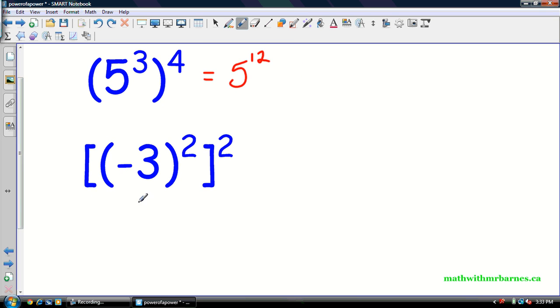And this one, same thing. So the only difference here is I have a negative base, so remember my base doesn't change. I got negative 3, 2 times 2 is 4. And that's really all there is to it, guys. Anytime you have a power of a power, you multiply exponents.